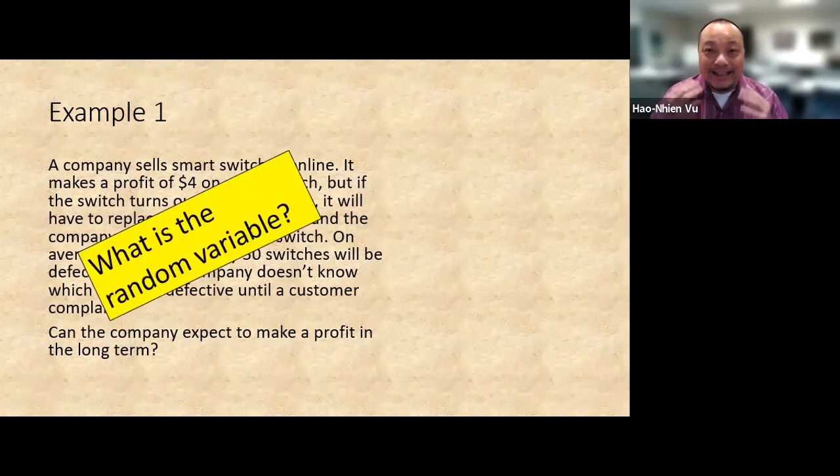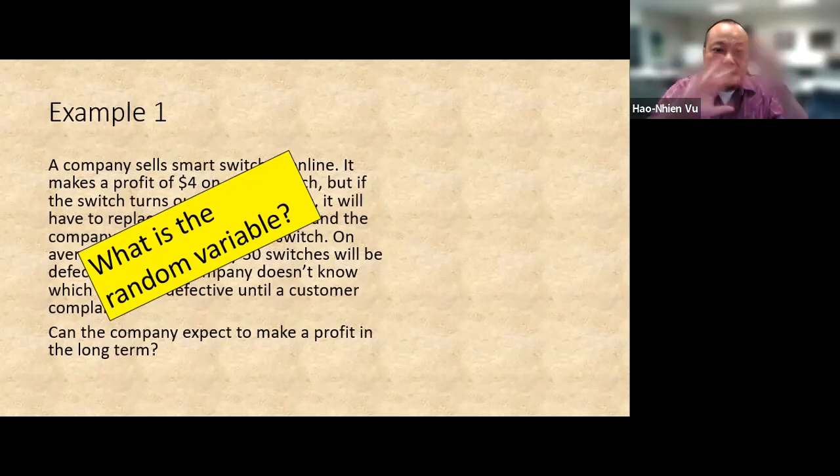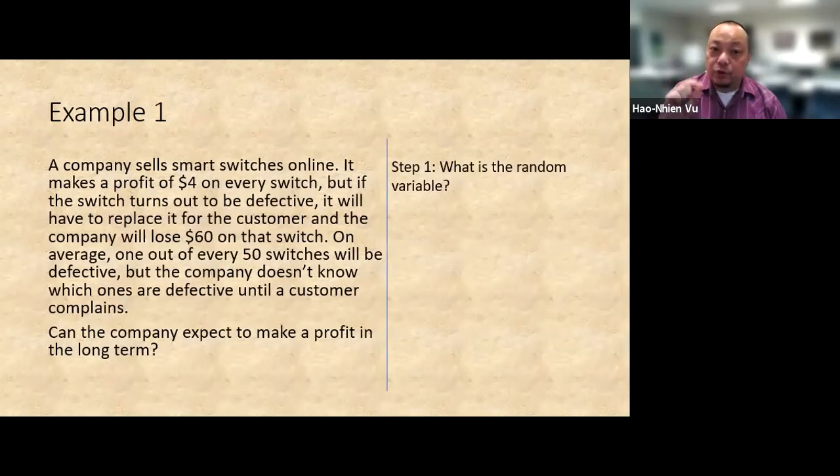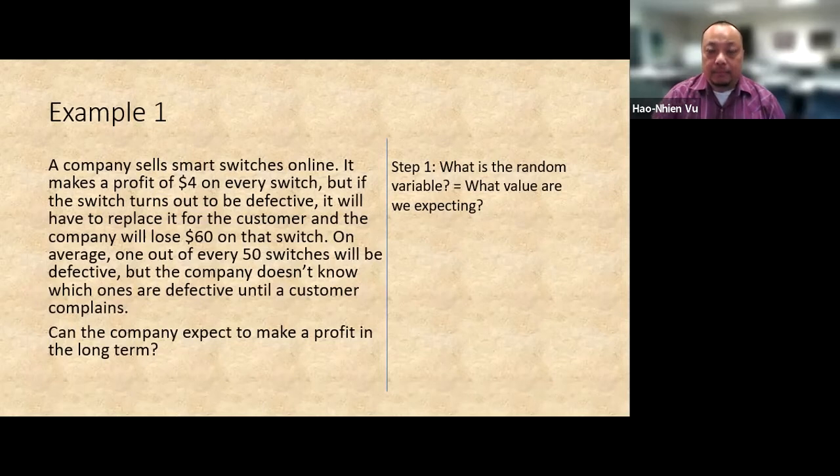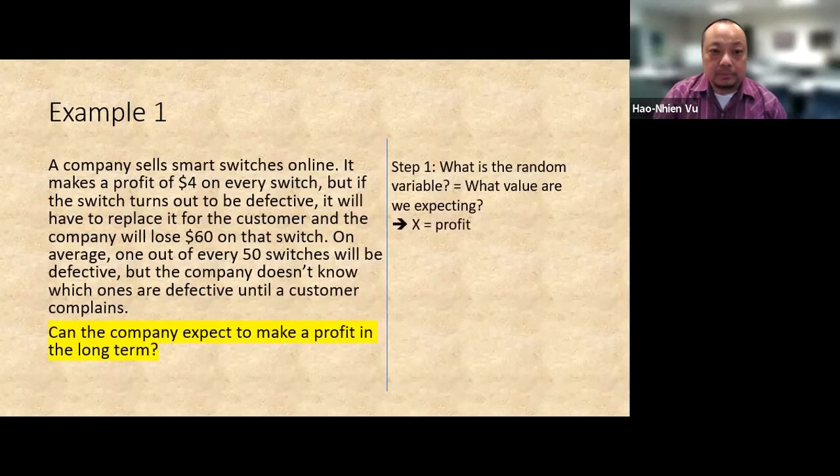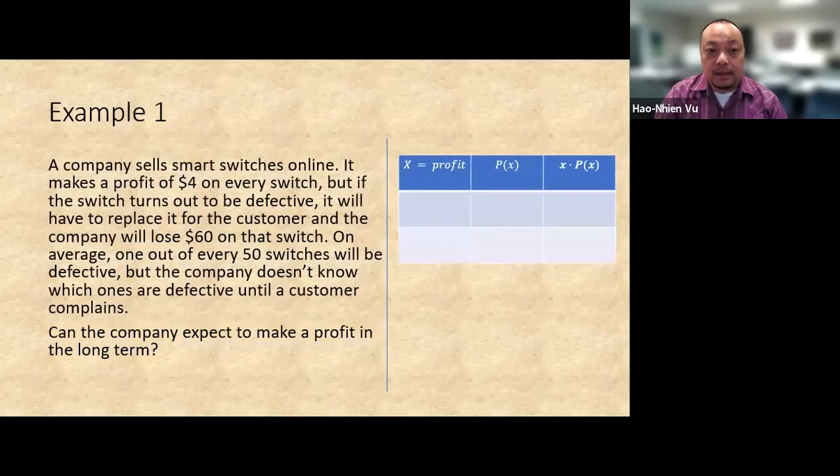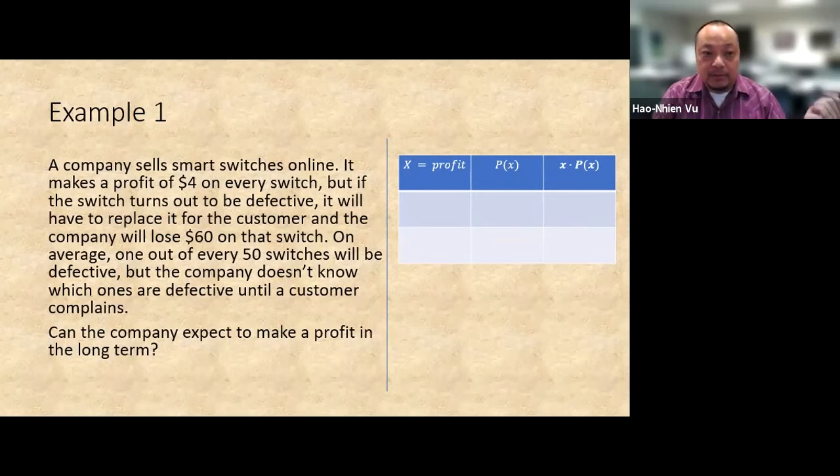First question though, what is the random variable? Where in all the words of the problem can we find the random variable x? And the way to find the random variable is to look at the question prompt. Ask ourselves, what value are we expecting? And the answer here is we're expecting the value of the profit. So profit is the random variable. Therefore we should make a table where x equals profit, p of x is the probability, and a column where we multiply x times p of x.